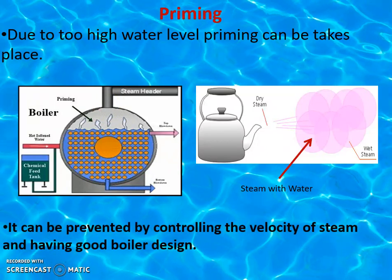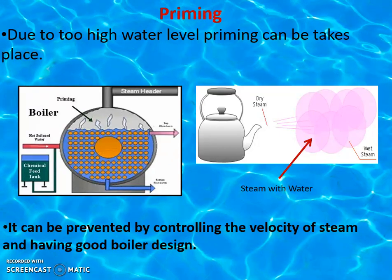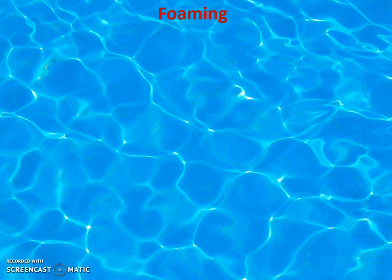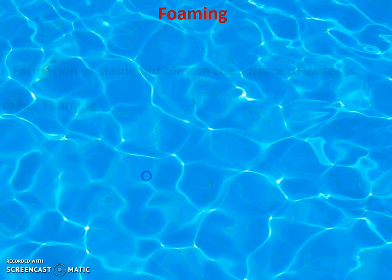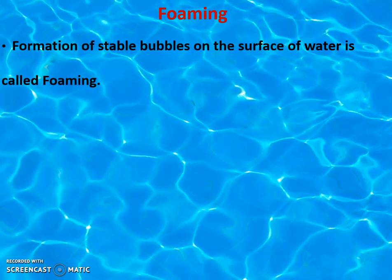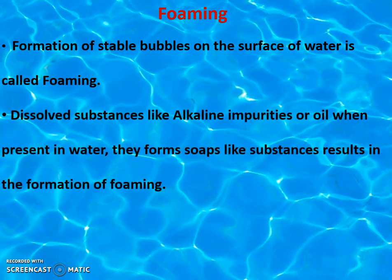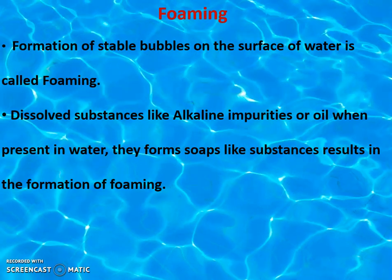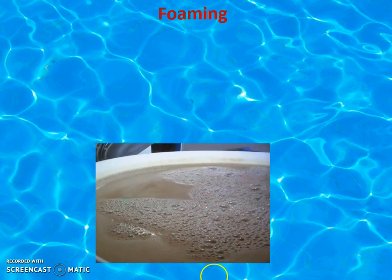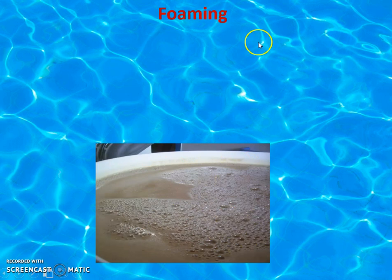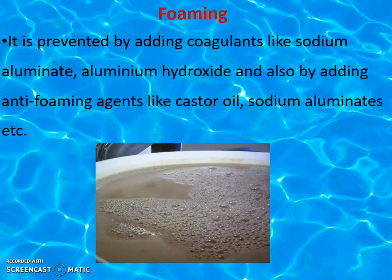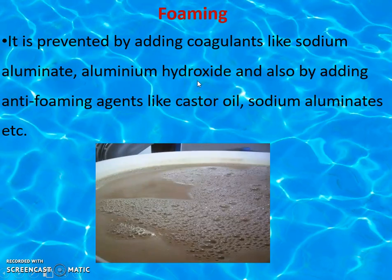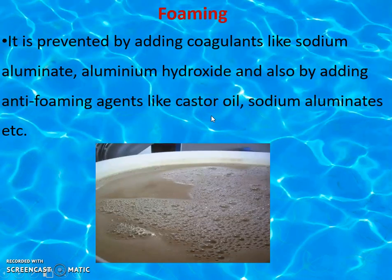Priming can be prevented by controlling the velocity of steam and having a good boiler design. Next is foaming — the name itself indicates foam or lather formation on the surface of water. If water contains dissolved substances like alkaline impurities or oil, they form soap-like substances, resulting in foaming. Foaming is prevented by adding anti-foaming agents or coagulants such as sodium aluminate, aluminium hydroxide, or castor oil.